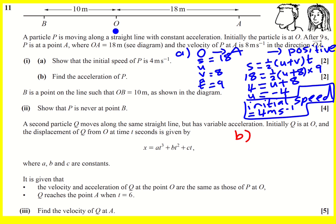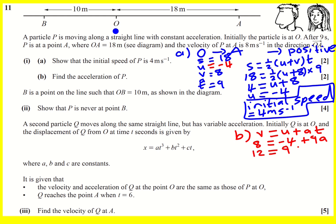In part B, we're asked to find the acceleration of P. Using the same SUVAT variables, U is now minus 4 — even though the speed was 4, we need to work in terms of velocity in SUVAT. I can use V equals U plus AT, which gives 8 equals minus 4 plus 9A. So 12 equals 9A, and A equals 12 over 9, which simplifies to 4 over 3 meters per second squared.